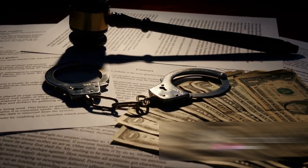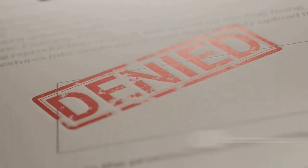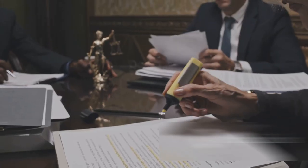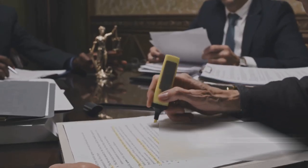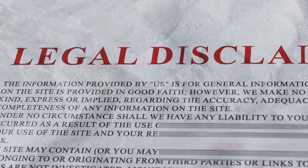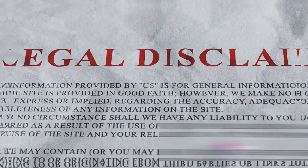If a plaint is found to be improperly stamped, the court has the power and the obligation to reject it outright. This is not a discretionary power — it's a mandatory one. The court cannot overlook this lapse regardless of the content of the plaint or the merits of the case. An improperly stamped plaint is a legal faux pas and is grounds for rejection.